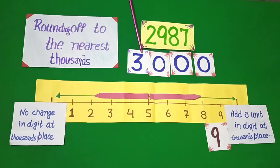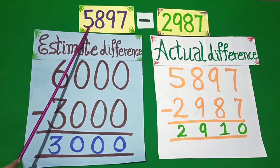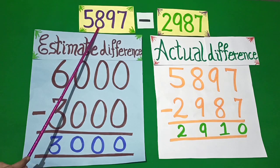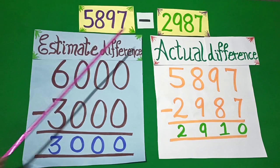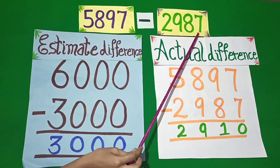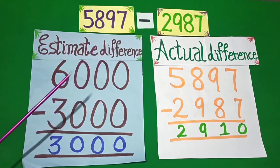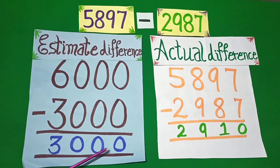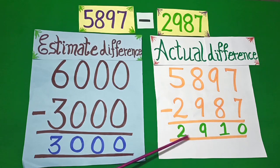So dear students, the estimated difference of 5,897 and 2,987 is 3,000 and the actual difference is 2,910.